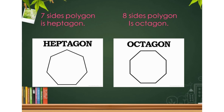Here we have heptagon and octagon. As the number of line segments increases, the name of the polygon changes. When there are 7 sides, it is called a heptagon. When there are 8 sides, it is called an octagon. So the new shapes you have learned are pentagon, hexagon, heptagon, and octagon.